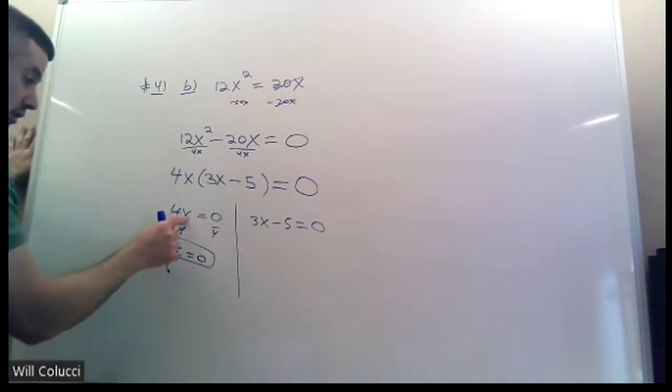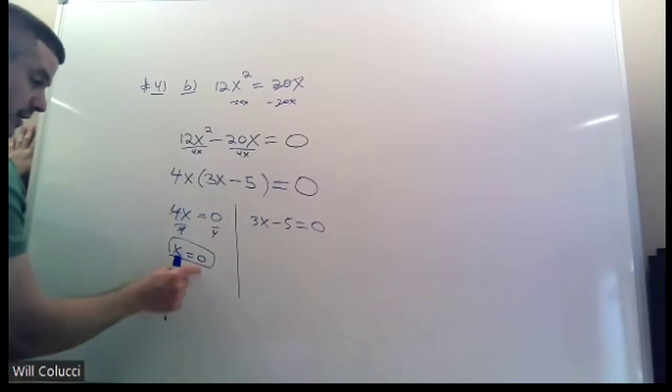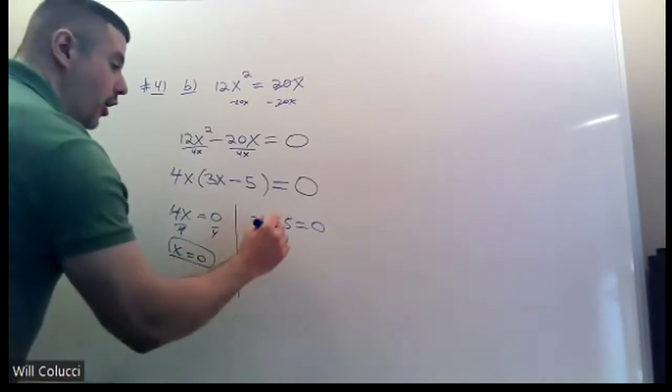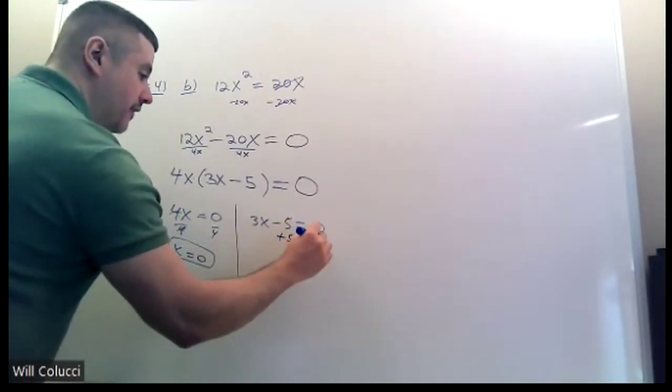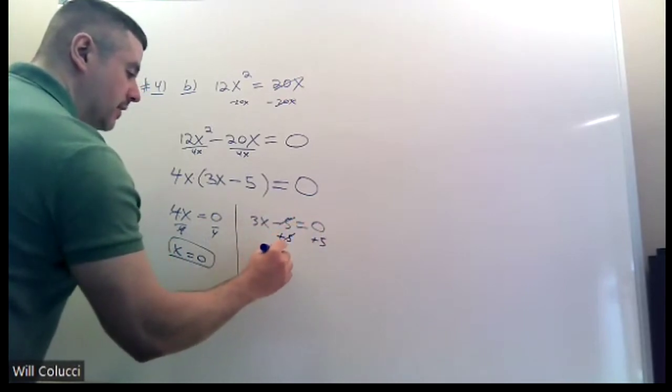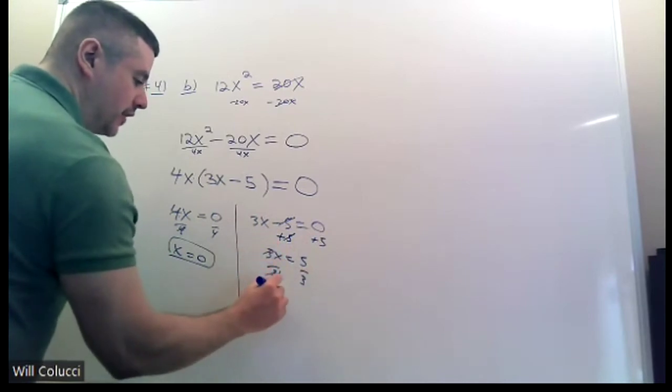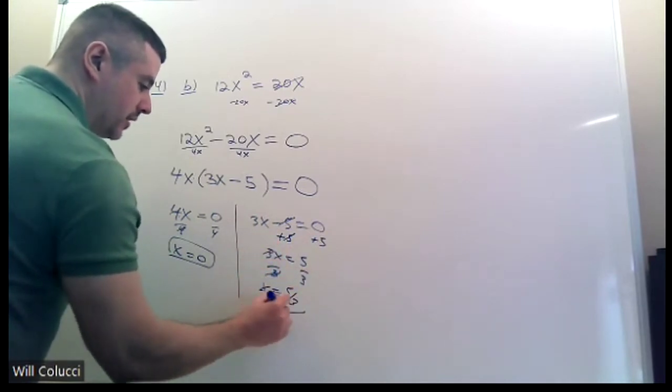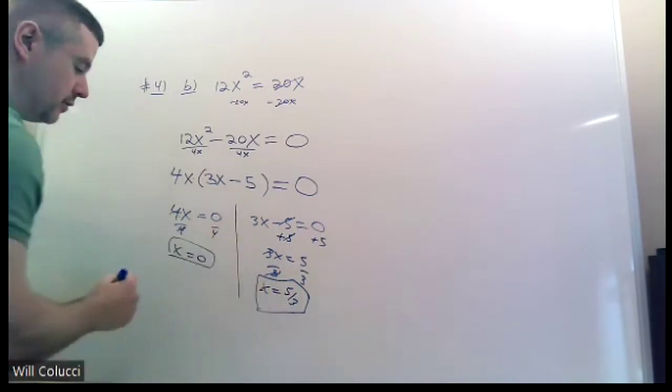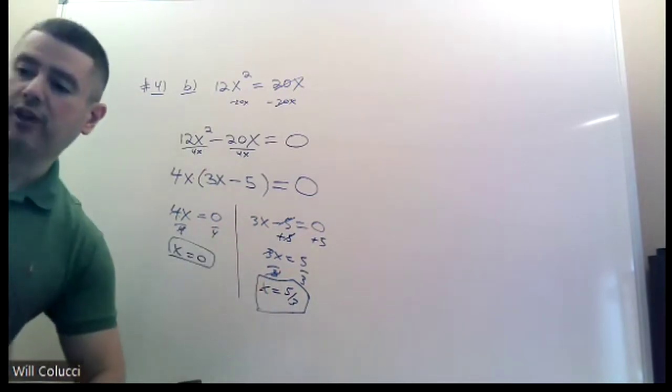This is multiplication. This is 4 times x. You're multiplying 4 by a number and getting 0. That number had to be 0. You divide the 4 away. If you multiply 4 by some number and you got 0, that number better be 0. Over here, you're going to add the 5. Those cross out. 0 plus 5 is 5. And then divide by 3. This is solving 101. This is from the remedial math class. We do this there. Just solve for x.